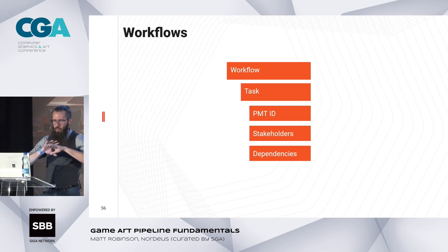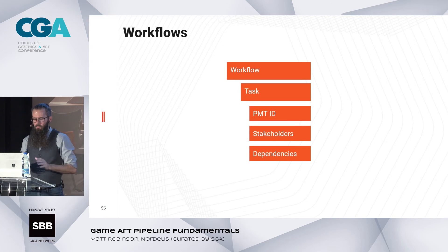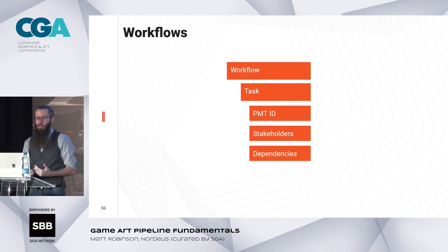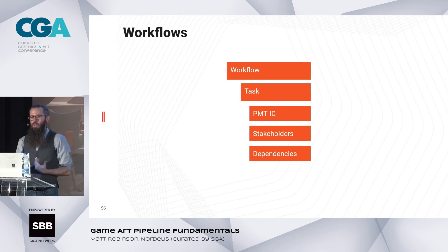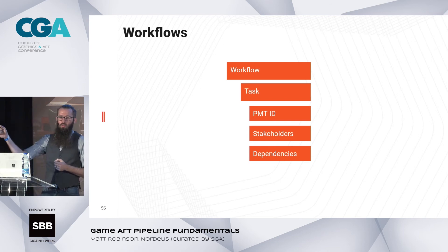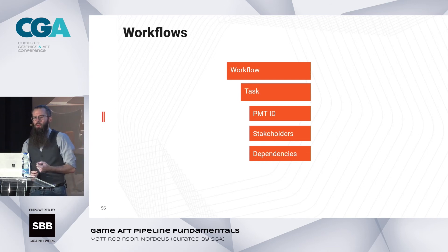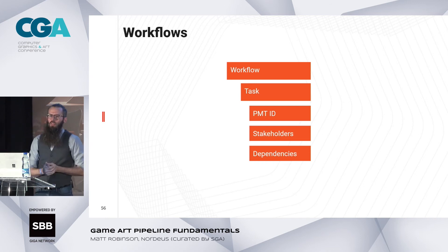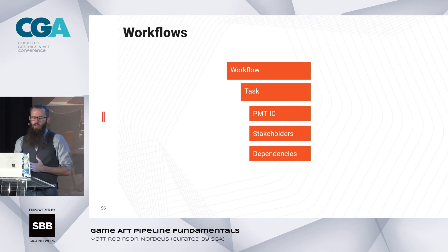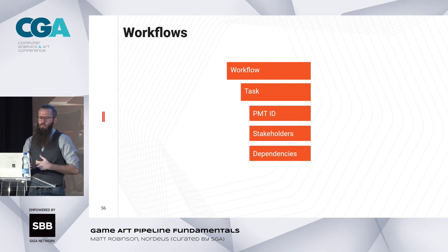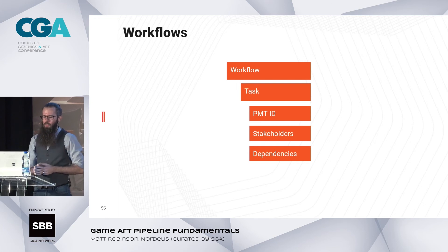That describes how anything is made. Getting down to specifics, a specific workflow instance contains specific tasks. The PMT ID is the project management tool ID — this is where you put a reference to the actual Jira task. The contributor isn't stored here because it lives in the Jira task. Stakeholders are still here because task tracking systems tend not to track them. We also look at the dependencies — the specific tasks this workflow instance depends on.